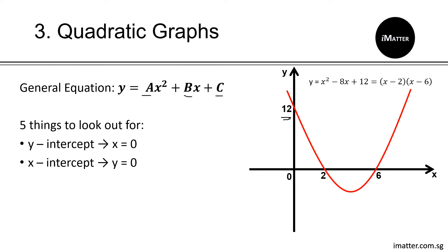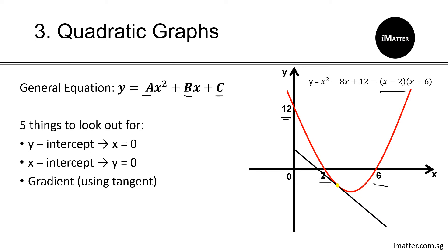Next is to find your x-intercept by substituting y equals 0. Using the quadratic equations from previous chapters, you can factorize, use your calculator, or use the quadratic formula. Here the equation factorizes into (x minus 2)(x minus 6), so solving for x gives x-intercepts of positive 2 and positive 6. Next is to find your gradient, which requires drawing a tangent. For example, if the question asks for the gradient at x equals 3, draw the tangent as close as possible to that point, then choose any two points on the tangent line and use rise over run.